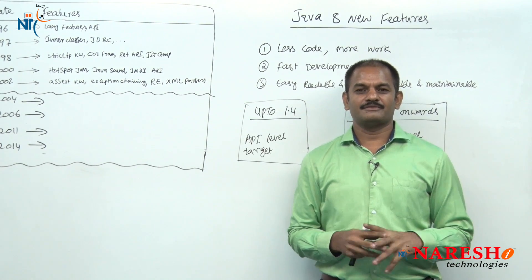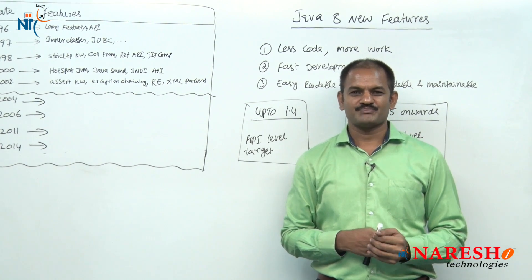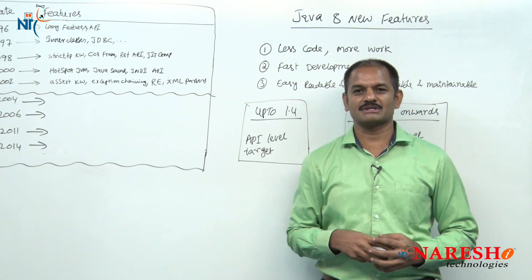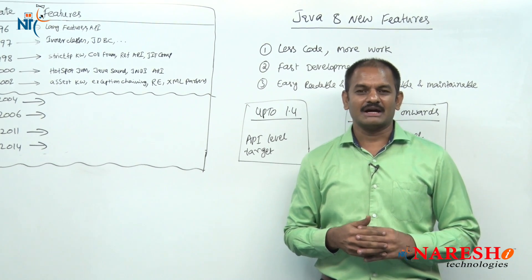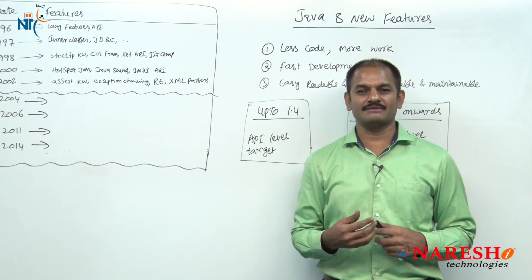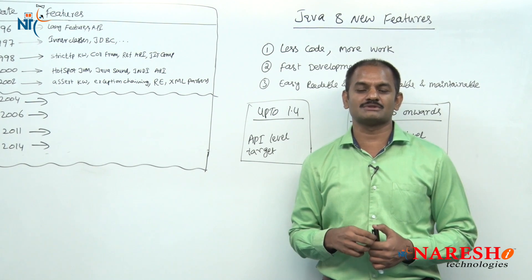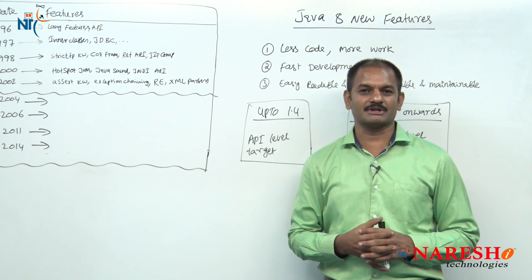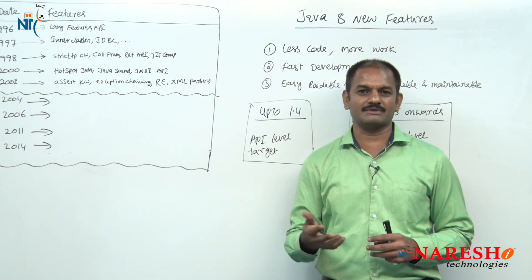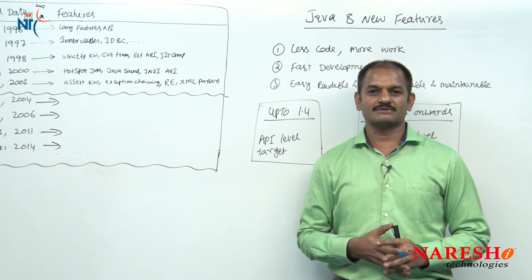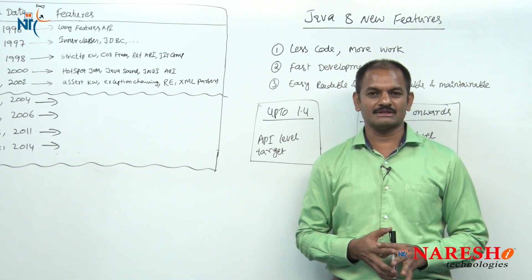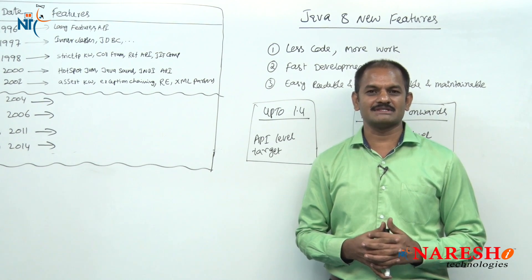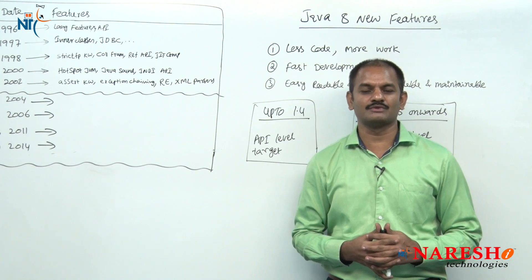The first point I want you to understand: Java language was introduced from version 1.0, and every year they are adding some new features to the Java language. They keep on releasing new versions every year or every two years. By adding all new features, Java language is released with new version numbers.